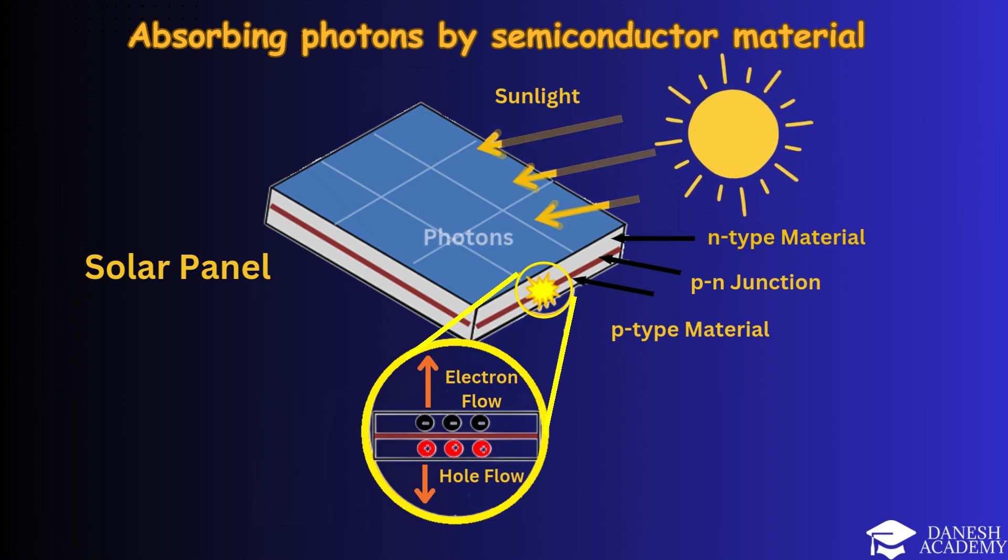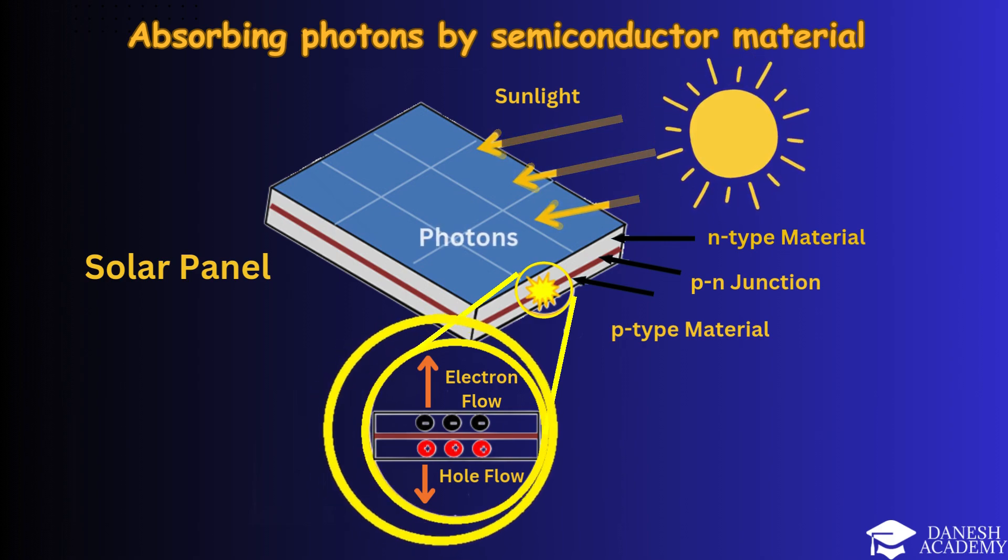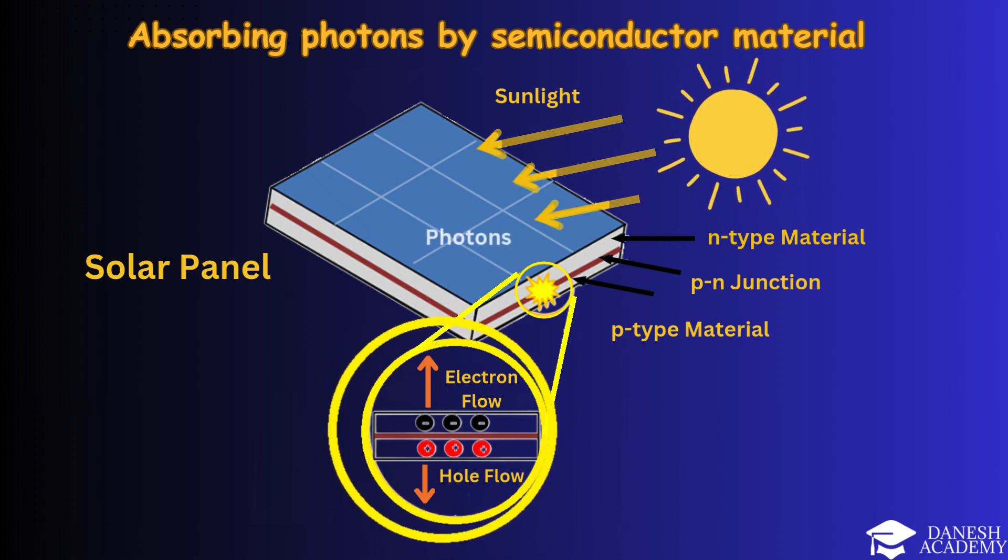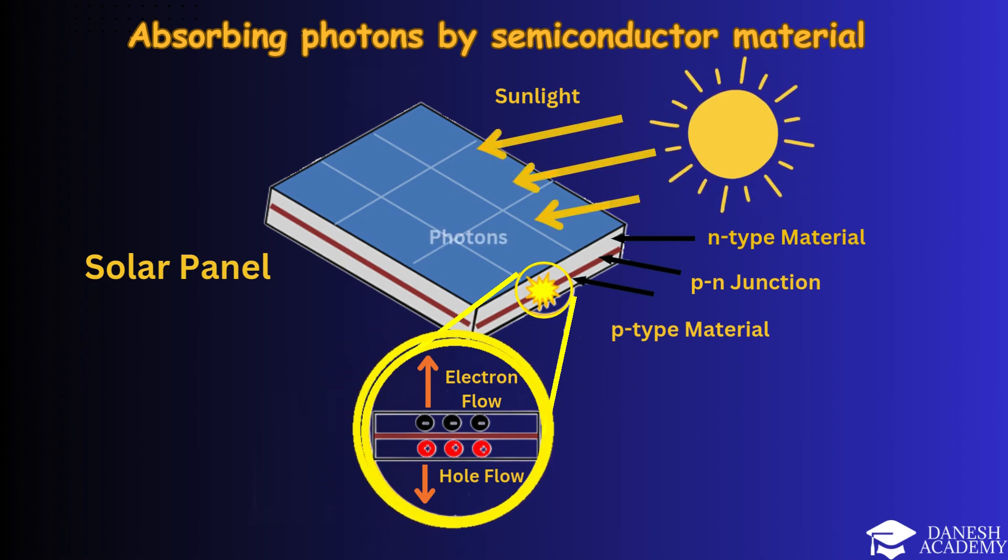Charge carrier movement: Electrons are pushed to the N-type layer, while holes move to the P-type layer. This movement generates a voltage across the cell, forming the foundation for electrical current.